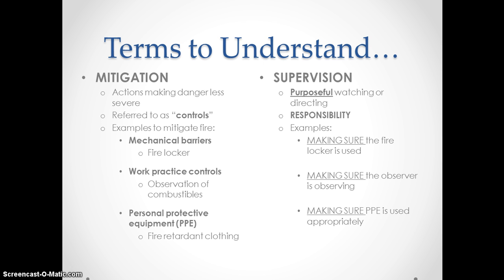Mitigation is the act of making a danger less severe. We want to address our hazards and our risks — to try and make the conditions safer than what they actually are. To do this, we introduce controls. To control a fire, we could introduce mechanical barriers — a fire locker to keep the gasoline away from open flames. We could introduce work practice controls, having somebody observe the combustibles. We could have them wear personal protective equipment, such as fire retardant clothing. Regardless of the mitigation and controls, we need to have supervision. Somebody needs to actively be watching or directing what's going on. It's a responsibility that should be assigned — making sure the fire locker is used, the observer is observing, and the PPE is used appropriately.